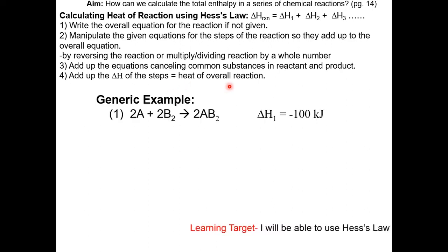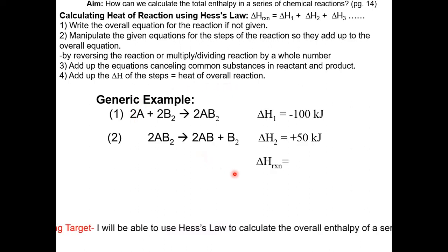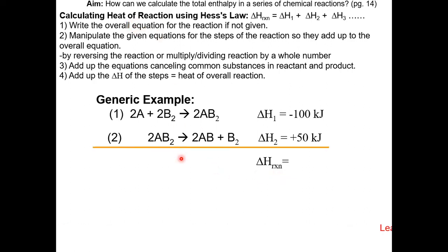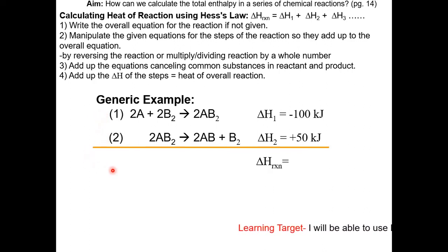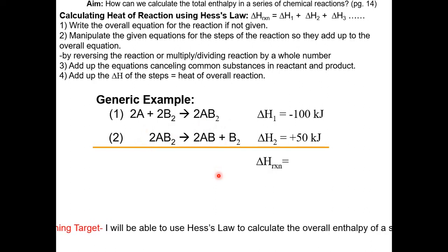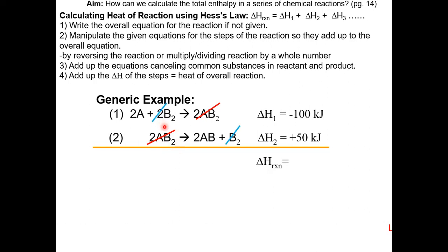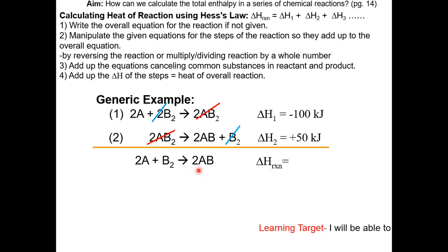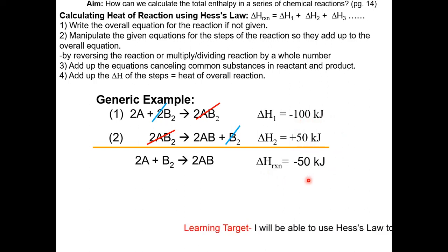Let's look at a generic example with two steps. The goal is to calculate the delta H of reaction. We combine equation 1 and equation 2 to get the overall equation. Notice that B2 and AB2 appear on both the reactant and product sides — we can cancel them out. So 2AB2 is cancelled out and one of the B2 is cancelled out. Combining equation 1 and equation 2, we get 2A plus B2 giving us 2AB. The heat of reaction is negative 100 plus 50 kilojoules, which equals negative 50 kilojoules.